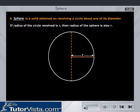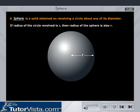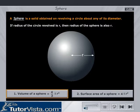If R is the radius of the circle revolved, then the radius of the sphere is also R. Click on any of the buttons given below.